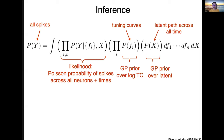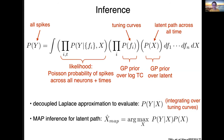We want to evaluate this integral and infer the model hyperparameters, and finally infer the latent X and tuning curve F. However, the inference itself is intractable. We propose a new variant of Laplace approximation called decoupled Laplace approximation. We use it to evaluate P(Y|X) by approximately integrating over the tuning curves F, and then infer X using the general MAP estimator — the maximum a posteriori estimator — conditioned on X. We can also obtain a closed-form solution for F due to Gaussianity.